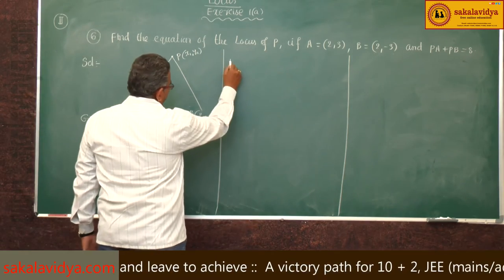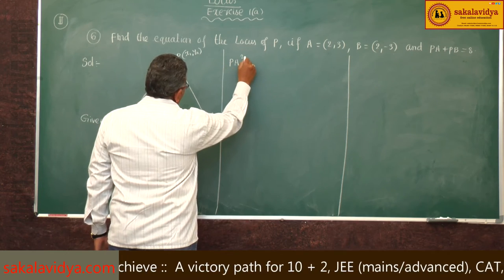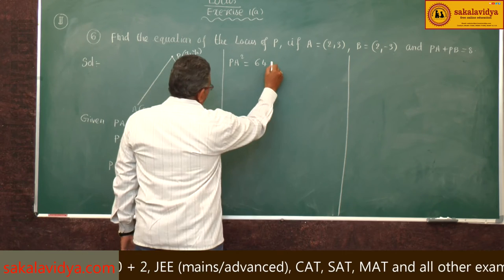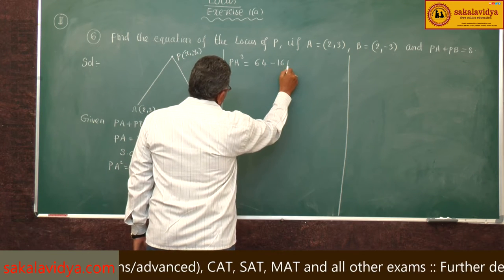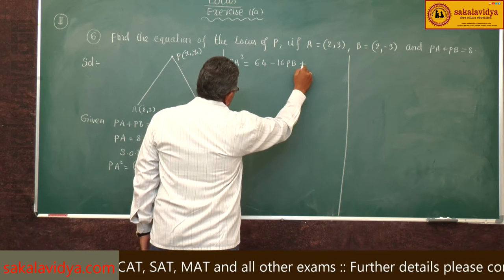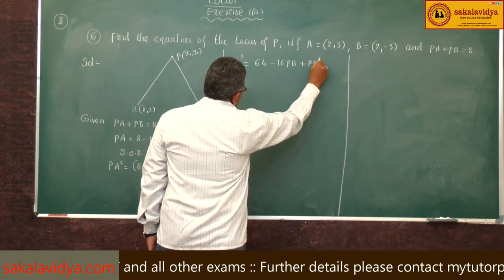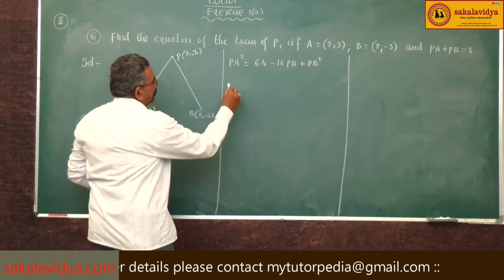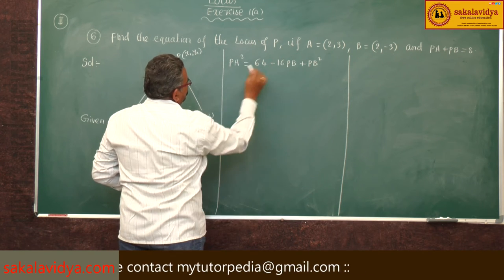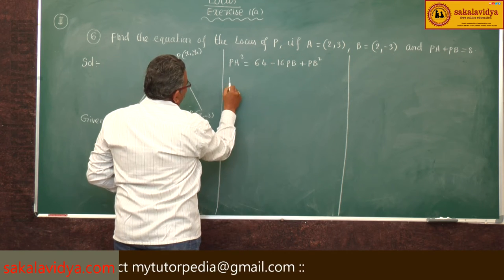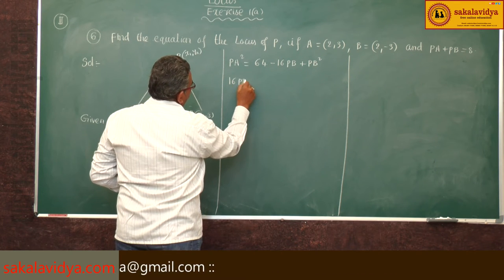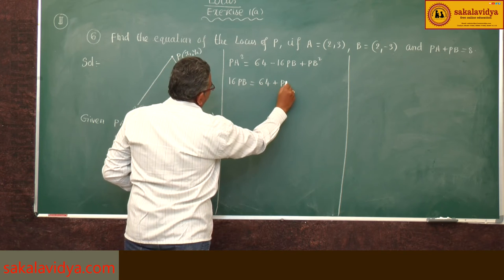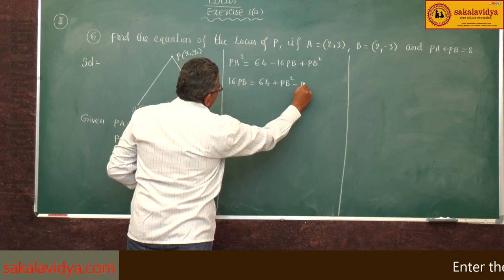PA² equals 64 minus 16·PB plus PB². Bringing minus 16·PB to this side and taking PA² to that side: 16·PB equals 64 plus PB² minus PA².